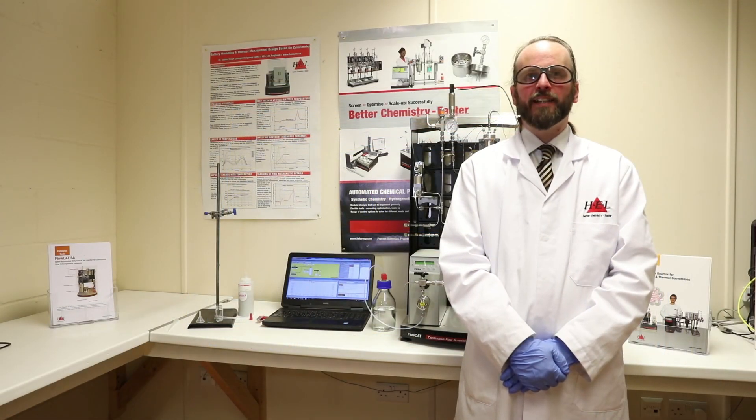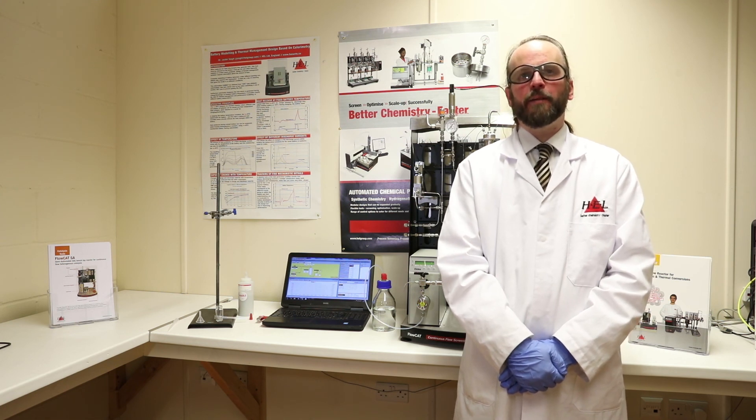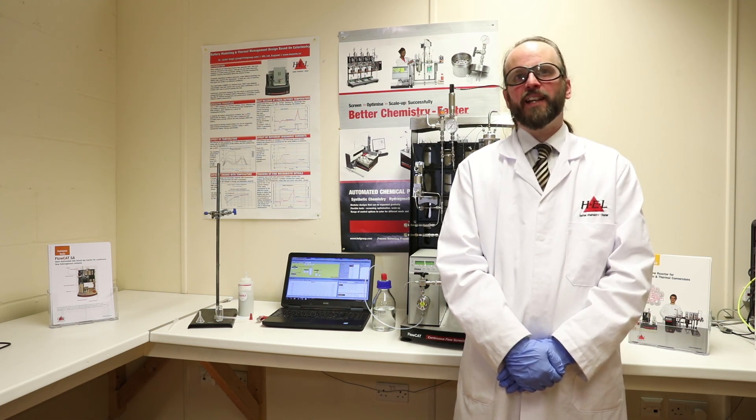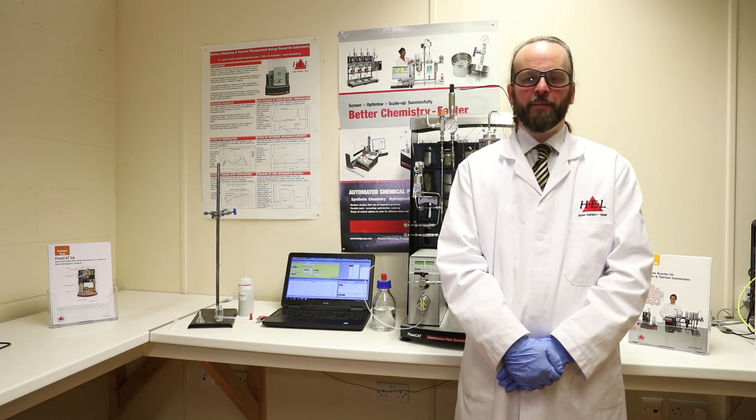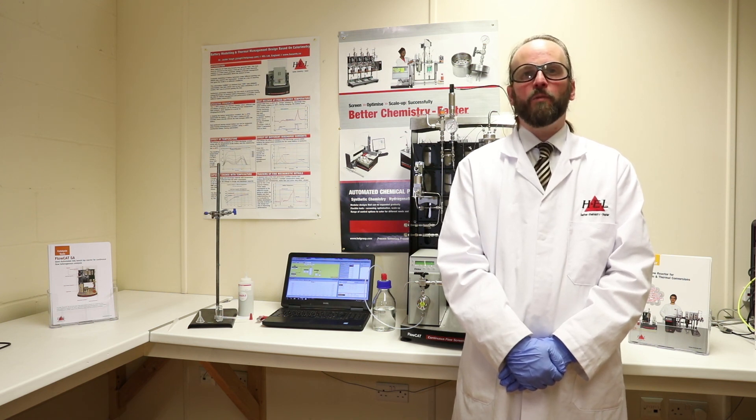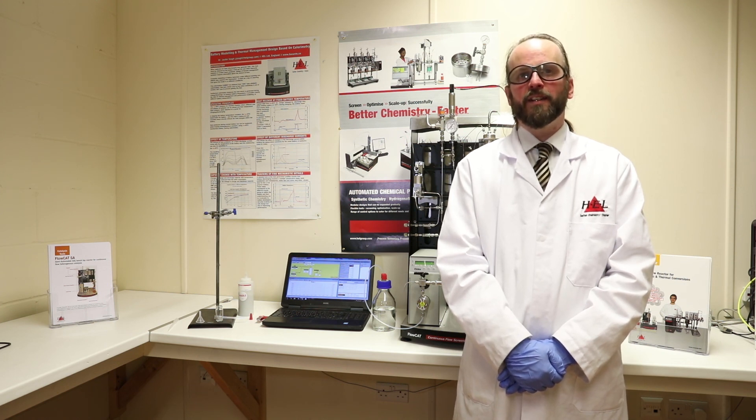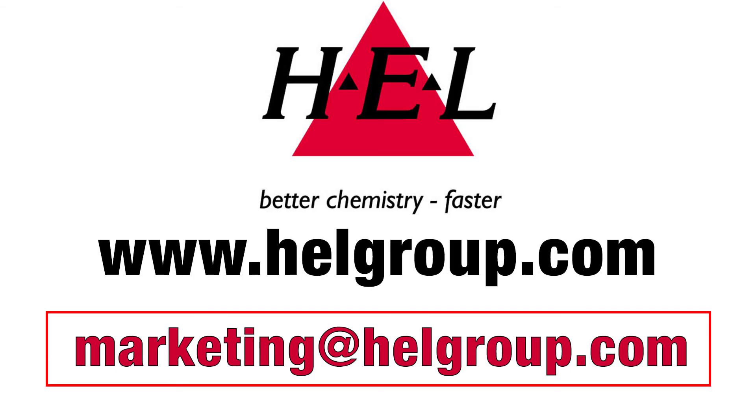So this is our Flowcat system. It's a benchtop system that can be easily used to produce kilograms per day of material. It's flexible and it's simple to use for all chemists and most of all it's safe. For more information on this or any of our other products, please visit our website at www.helgroup.com or email us at the address shown at the end of the video.